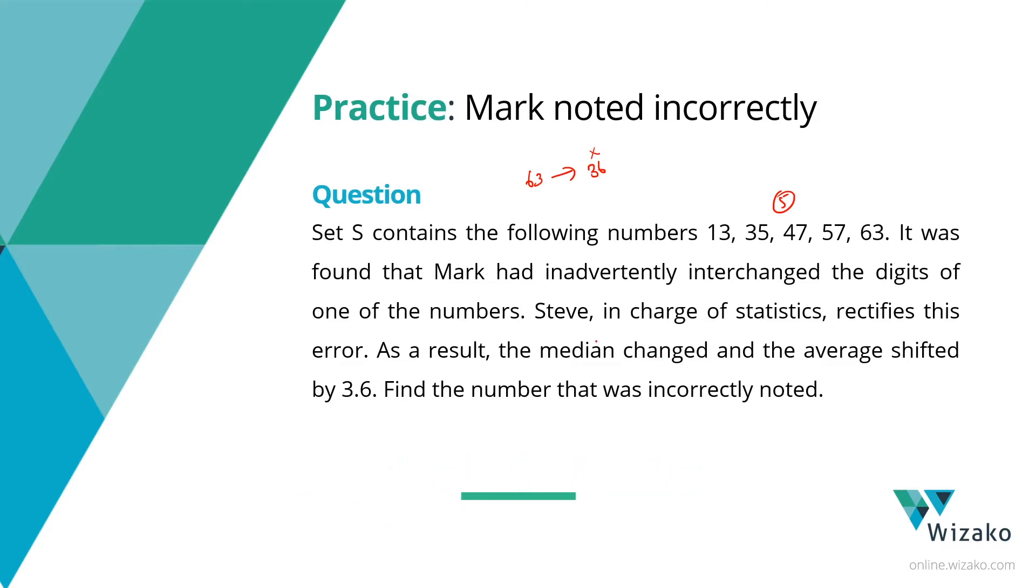Steve in charge of statistics rectifies this error. As a result, on account of writing it incorrectly, two things happened. One, the median changed. What is the median? The median of these five numbers, as we see, is 47. Because Mark noted it down incorrectly, he got a different median.